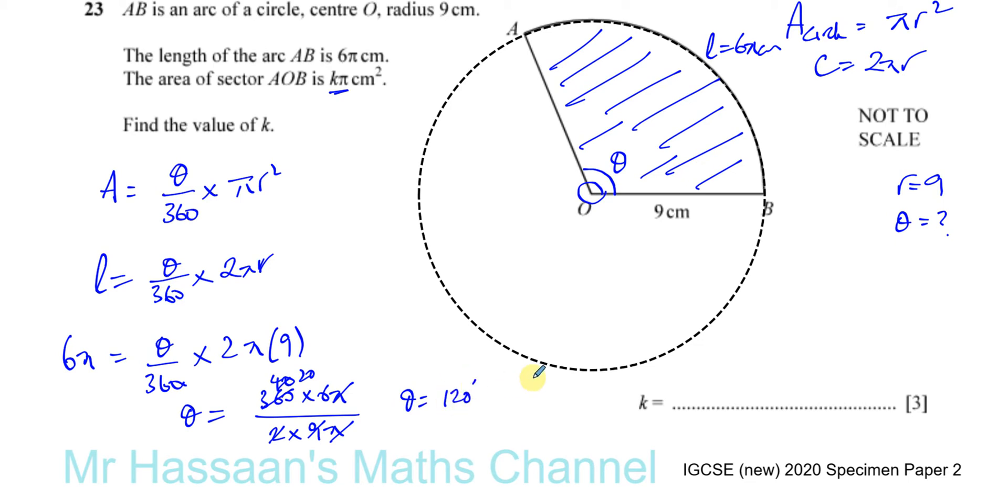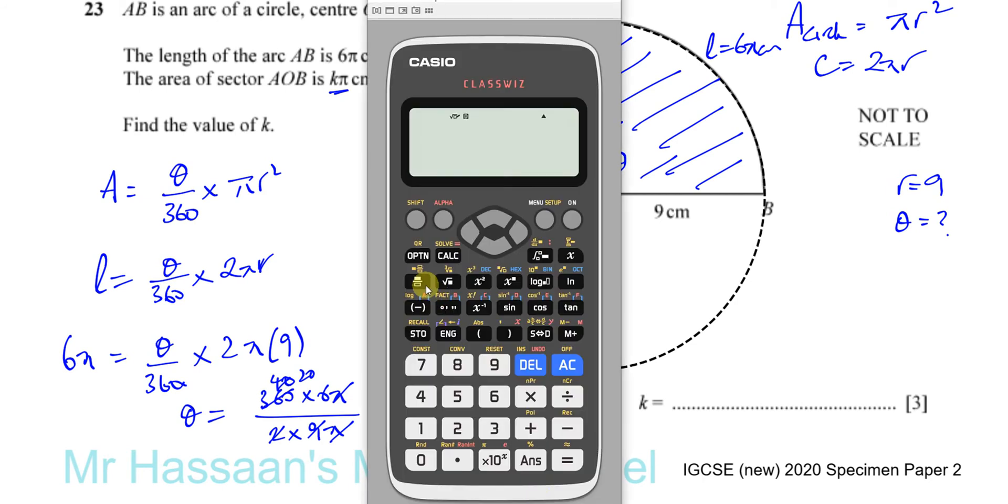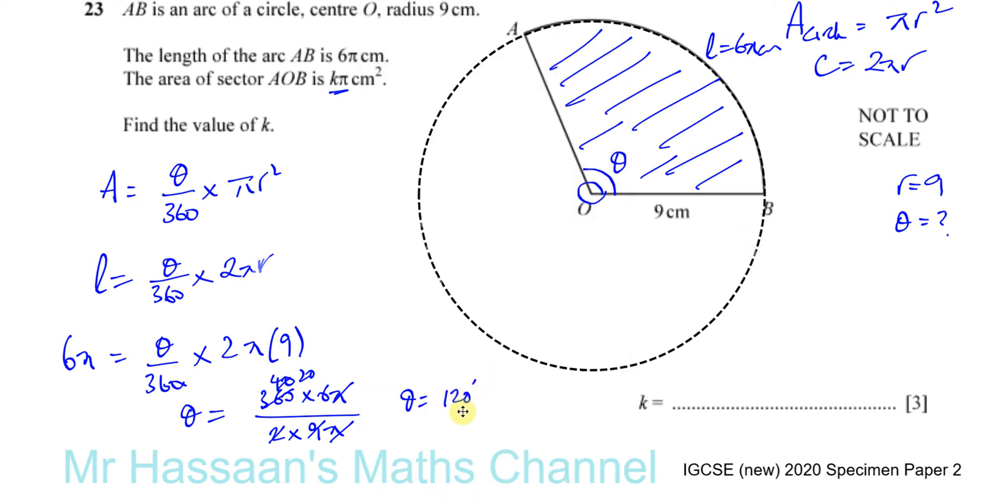Let me verify: 360 times 6 divided by 18. Hold on, there's something wrong. Oh, times 6, not 16. So 360 times 6 divided by 18 gives us 120. That's correct, θ is 120 degrees.